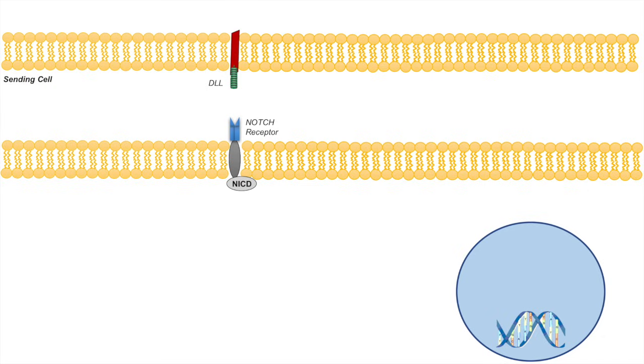The sending cell has more ligand than it does notch receptors. So the sending cell has more delta-like ligand or jagged protein than it does notch receptors. And vice versa for the receiving cell. The receiving cell has more notch receptor than it does ligand.